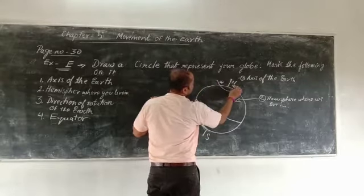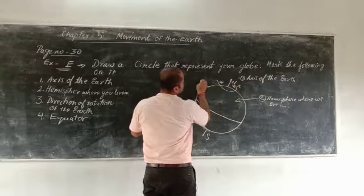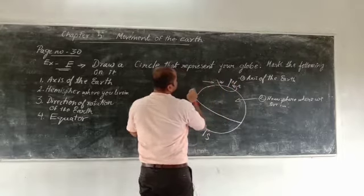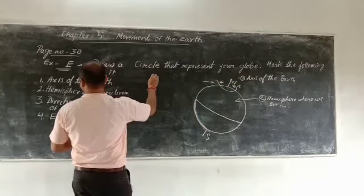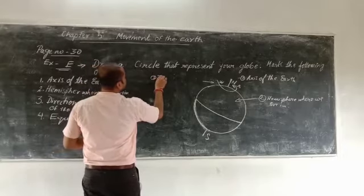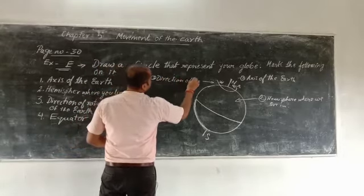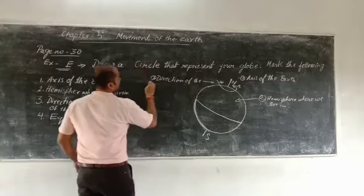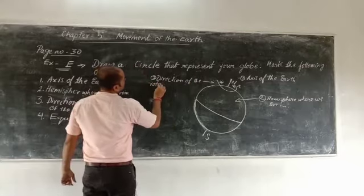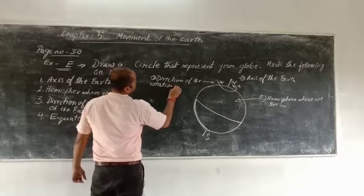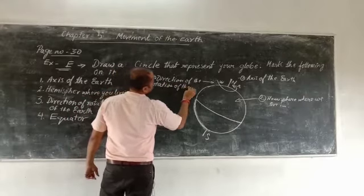West to east, so this is the direction. This is number three: direction of the rotation of the Earth.